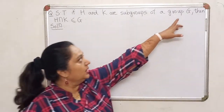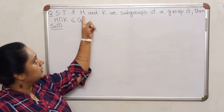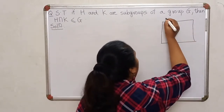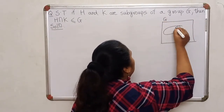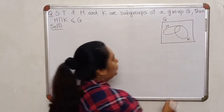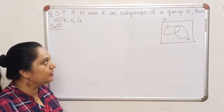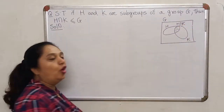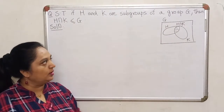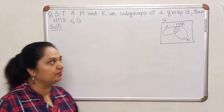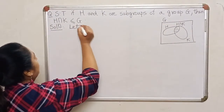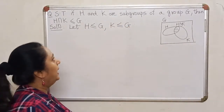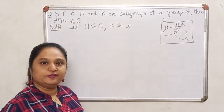Suppose I have a group G, and for this group suppose I have two subgroups denoted by H and K. I have a group G and I have two subgroups H and K of the group G. I wish to prove that the intersection of H with K also becomes a subgroup of G. Let us see if we can use Theorem 2 to prove that the intersection will also be a subgroup. Firstly, it is given that H is a subgroup, K is a subgroup of G, and we wish to prove that H ∩ K is a subgroup of G.